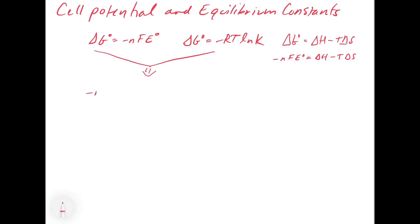So if we make nFE equal to minus RTlnK, we can reorganize this by bringing the minus nF down to the other side. What we get is E equals plus, because the minus cancels with the minus, RT over nF times lnK.